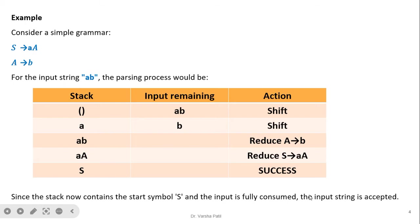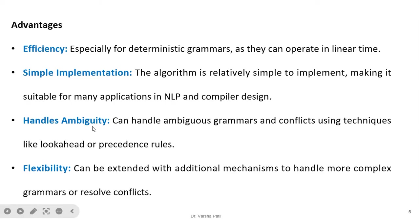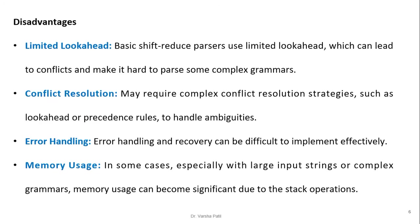Advantages of the shift-reduce parser: efficiency — especially for deterministic grammars, as they operate in linear time; simple implementation — the algorithm is relatively simple to implement, making it suitable for many applications in NLP and compiler design; it handles ambiguity — it can handle ambiguous grammars and conflicts using techniques like look-ahead or precedence rules; flexibility — it can be extended with additional mechanisms to handle more complex grammars.